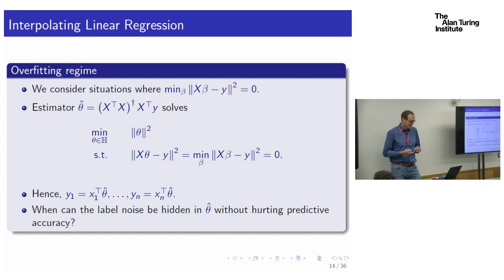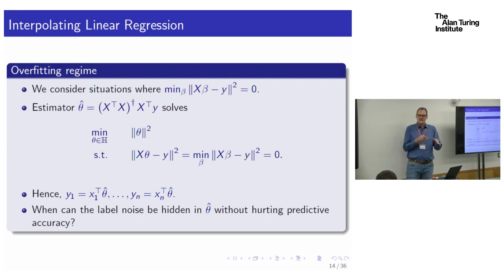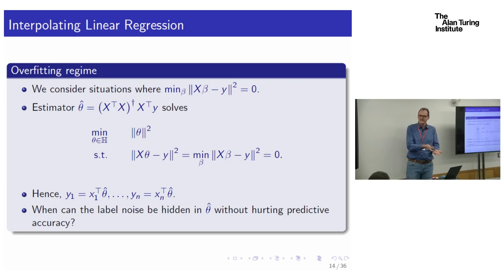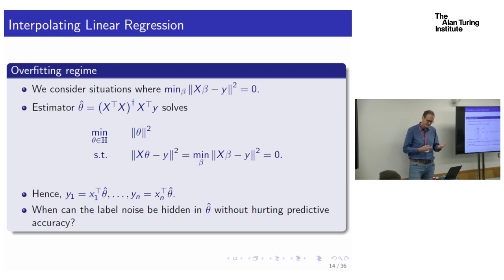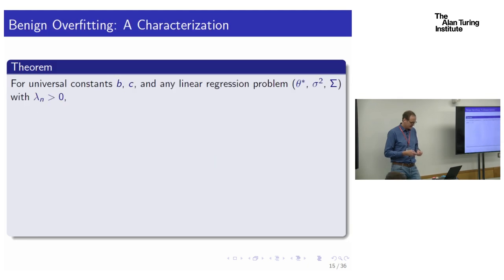I'm not advocating this as an approach to linear regression — just interested in when can we take this approach and still do okay. When is it not a crazy idea to be interpolating this way? Here is the theorem that characterizes the circumstances under which we can do this and still get pretty good predictive accuracy.